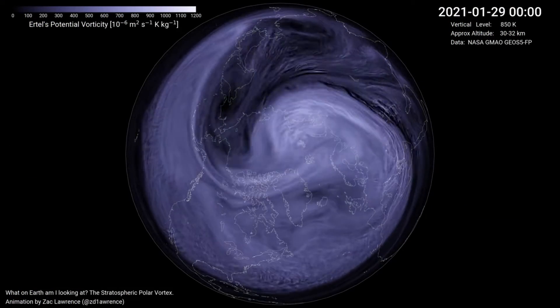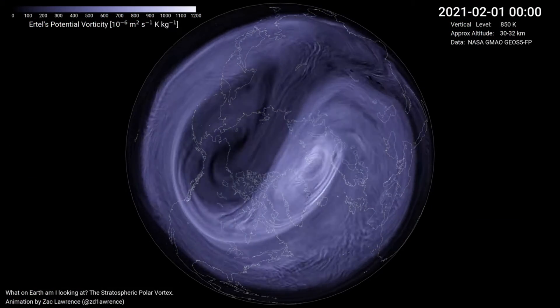Several times a decade, these winds actually slow down and reverse direction, causing the cold air to spill outwards from the pole into the mid-latitudes.